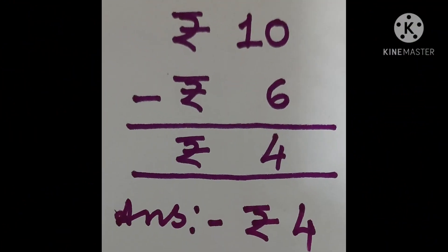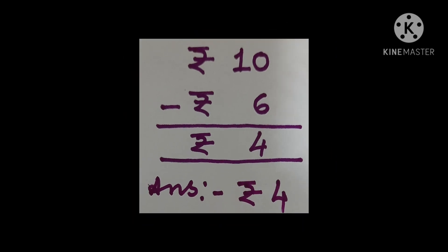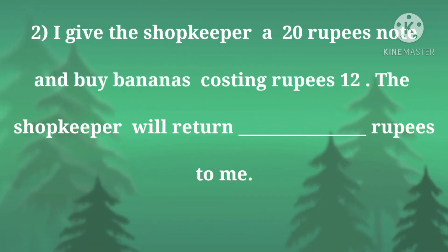See how you are going to find out the answer. So 10 minus 6 — what is the answer? 4. The symbol you have to put it.